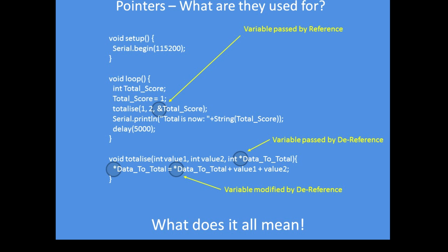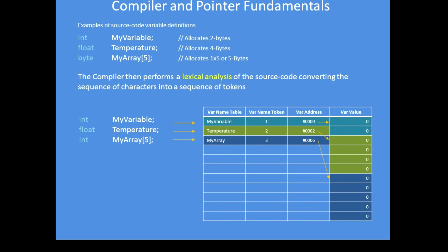So what does it all mean? When you run the compile function on the IDE, the compiler's first task is to undertake what's called a lexical analysis, converting the sequence of characters in your source code into a series of tokens. Not all compilers are the same as the one I'm going to explain here, but in broad terms they're pretty much the same.